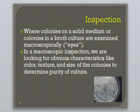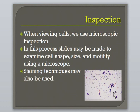When a culture appears macroscopically to contain only the specimens desired, we then must inspect microscopically. In a microscopic inspection, we often fix a sample of specimen onto a glass slide and stain it for better viewing. We view the cells under high magnification using a microscope. One is able to distinguish cell shape, size, and other morphological characteristics, which help determine the purity of the culture as well as help identify the specimen.